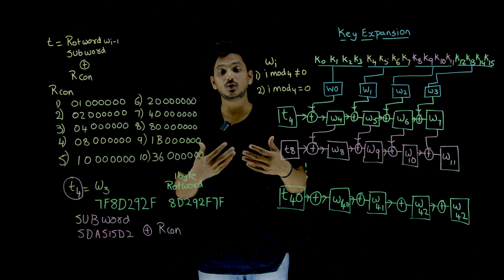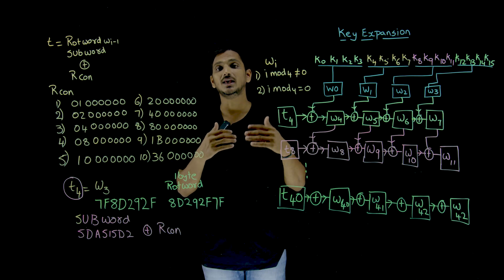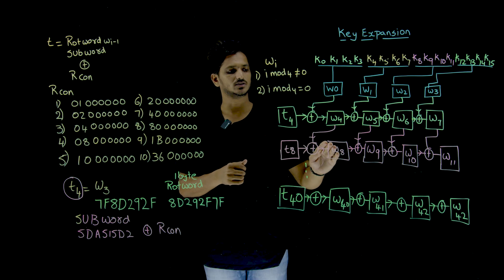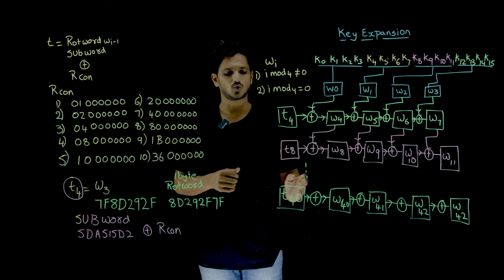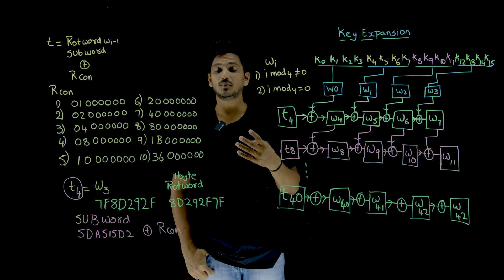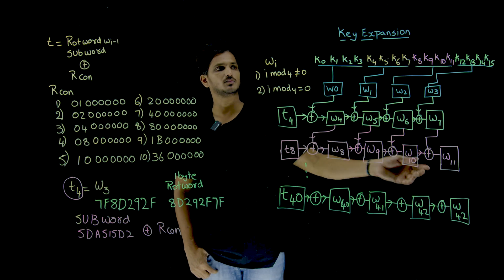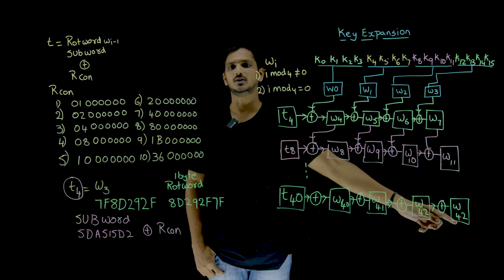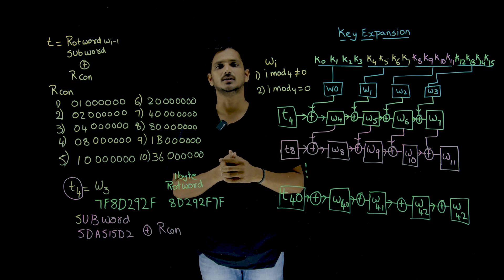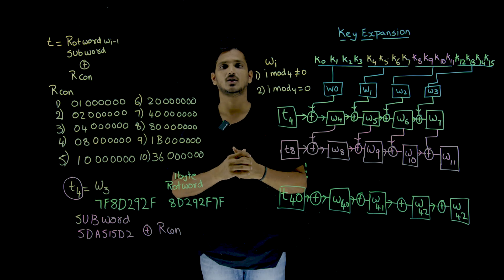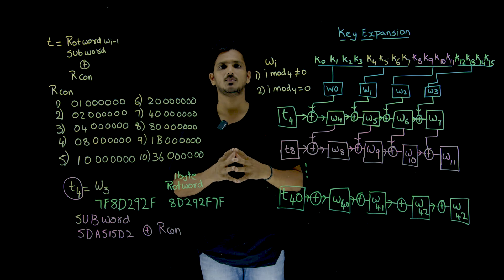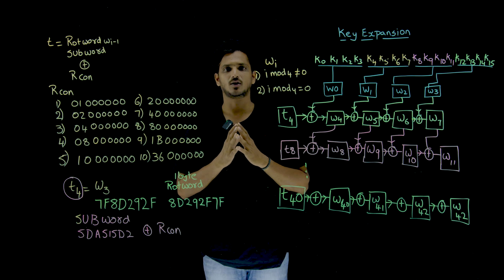Similarly, you generate the next keys: W8, W9, W10, W11, and so on up to W40, W41, W42, W43. In 10 rounds, 44 words are possible — W0 to W43. That is how we generate key expansion in AES. Hope you understand this class. If you have any questions, please post them in the comment section below. Thanks for watching. If you have not subscribed to our channel, please subscribe and press the bell icon for the latest updates.